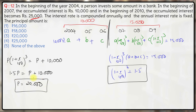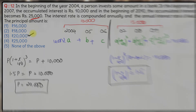Hence the initial principal is option 3: ₹20,000. This is how you can solve this question without having to do a lot of calculations. That's it for this video, thank you and bye.